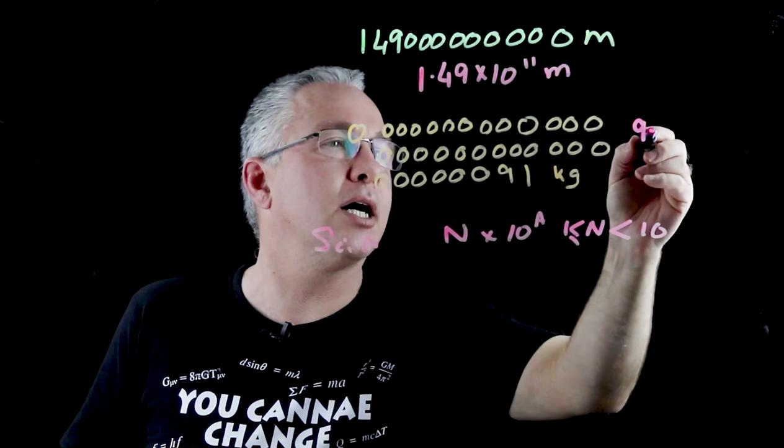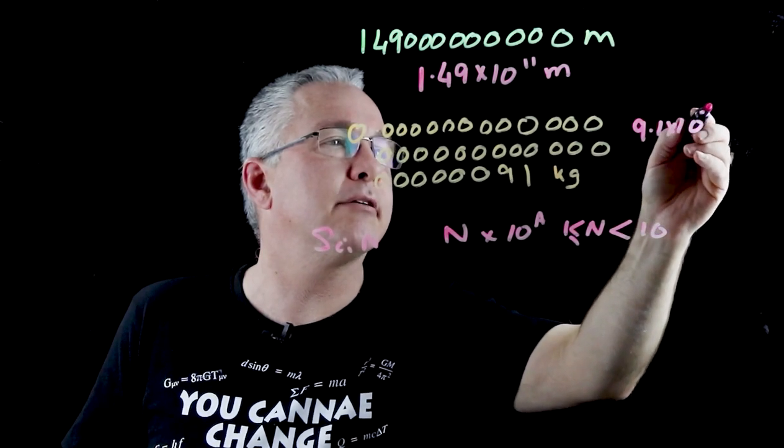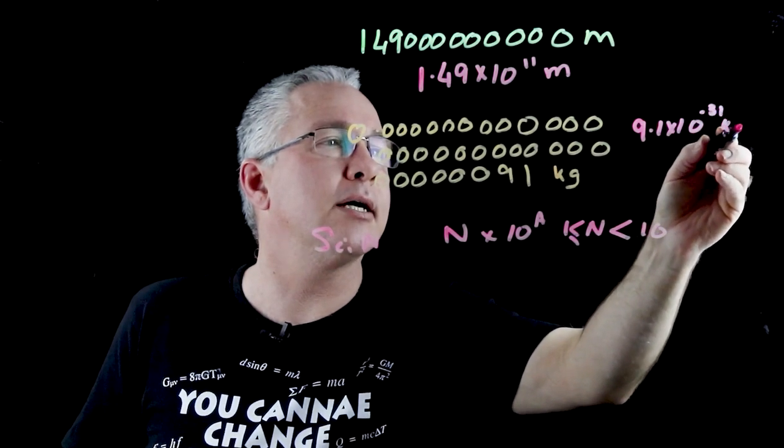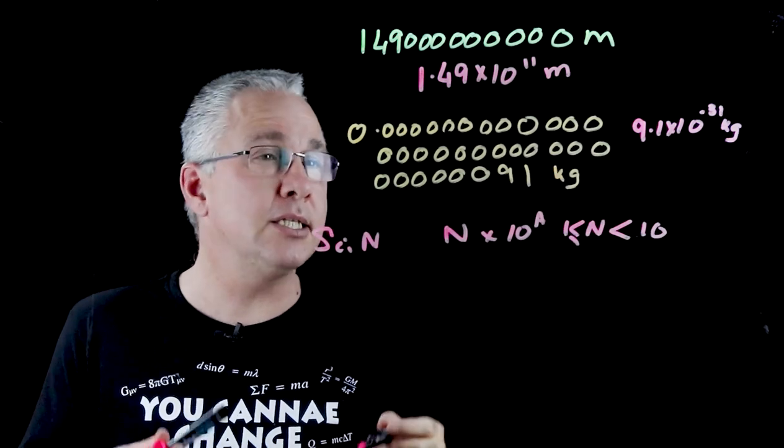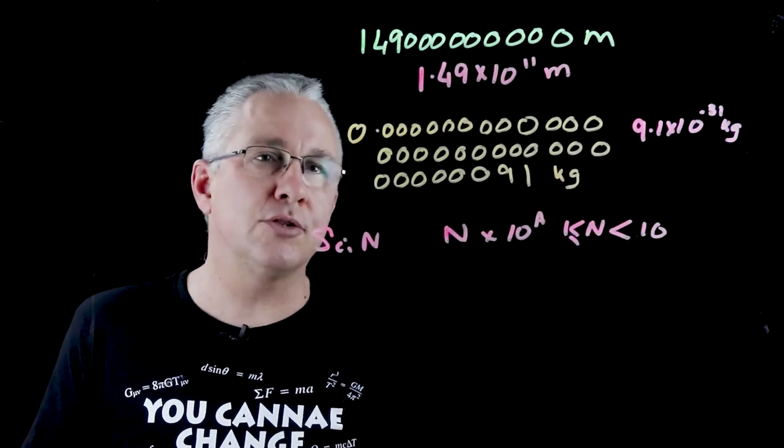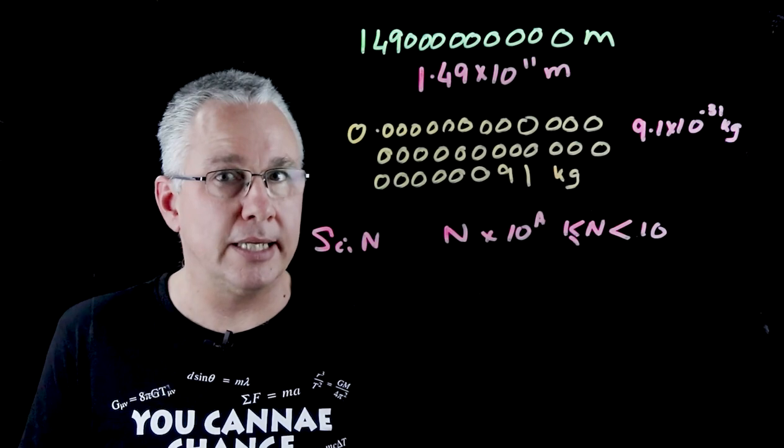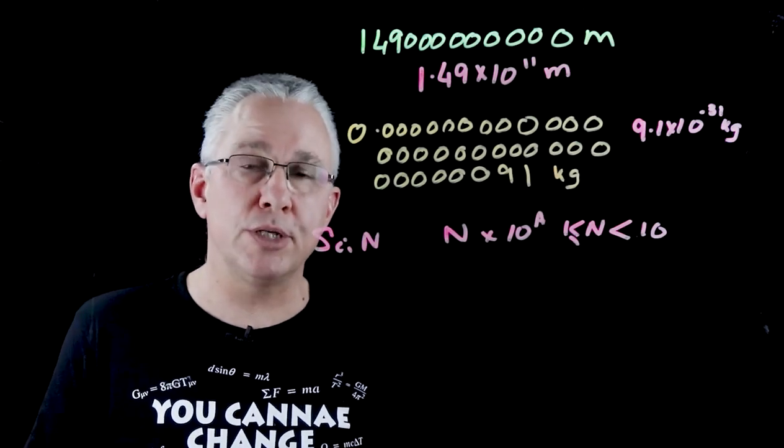What about our mass of an electron? Well, if I do the same technique, I'm going to get 9.1 × 10^-31 kilograms. So that's those two numbers in scientific notation, and that's much easier to work with when you're calculating things with your calculator or with a spreadsheet.